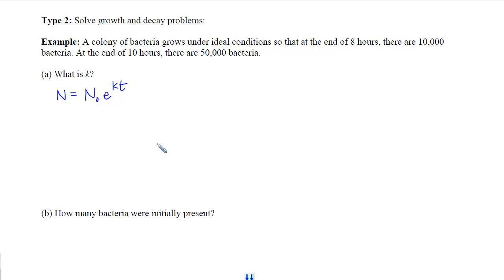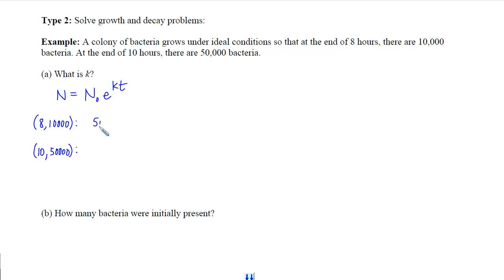We were given two pieces of information: when time was 8 we had 10,000 bacteria, and when time was 10 we had 50,000 bacteria. Plugging both of those points in gives us a system of equations: 10,000 equals N-initial times e to the 8k, and 50,000 equals N-initial times e to the 10k.